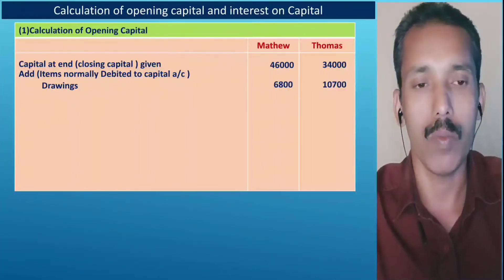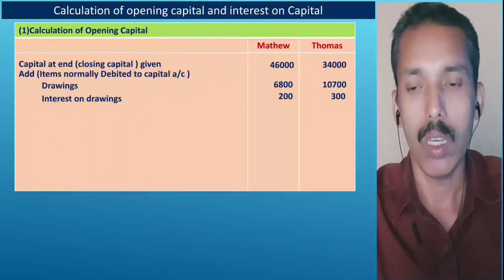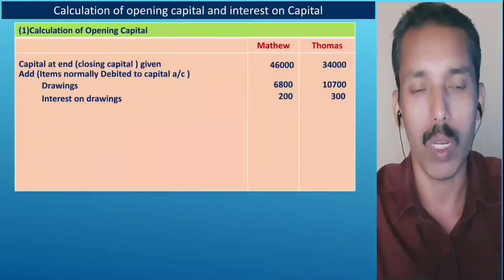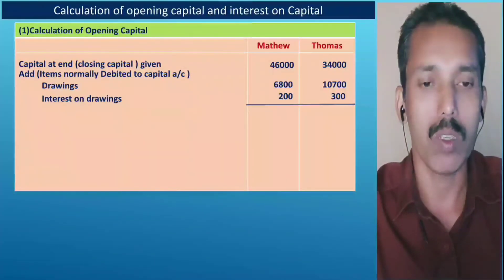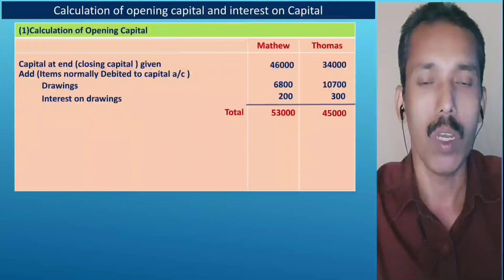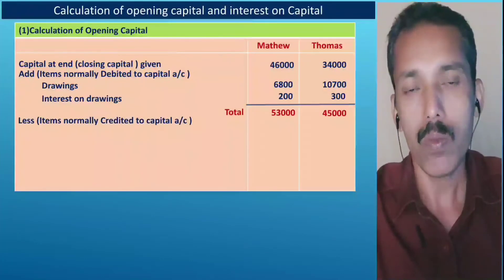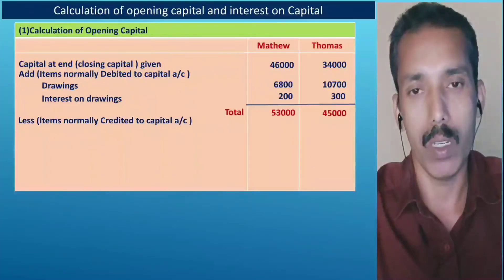Drawings: Matthew Rs. 6,800 and Thomas Rs. 10,700. Interest on drawings: Matthew Rs. 200 and Thomas Rs. 300. These two debit items are added. Credit items include salary, commission, and share of profit, which are deducted.